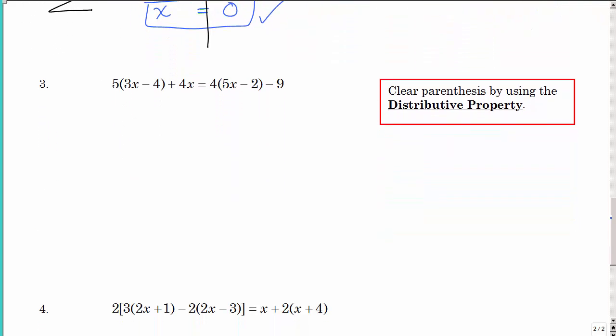Let's look at the next example. Oh, now we have parentheses. So we want to clear our parentheses by using that distributive property that you should have learned previous to this class. Meaning, I need to distribute the 5 over the 3x minus 4 and distribute the 4 to the 5x minus 2. I'm only distributing it to the parentheses. That 5 is next to that parentheses. That means multiplication. So I have 5 times 3x, 5 times negative 4, and I'm going to bring down the plus 4x. Then I have 20x minus 8 minus 9.